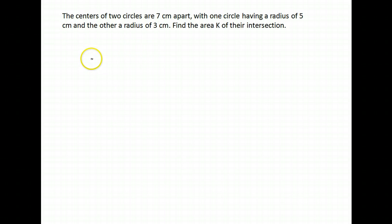We start with a larger circle and then a smaller circle, and they intersect one another. They overlap. The centers are seven centimeters apart, so this full length is seven. What we want to know is what's the area of their intersection.